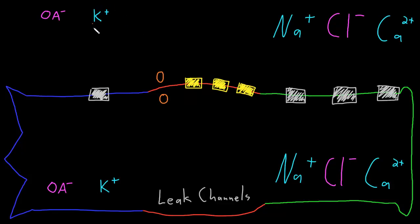We'll consider that all these key ions have the same concentration inside and outside the neuron, so that there are no concentration gradients for organic anions, potassium, sodium, chloride, or calcium.